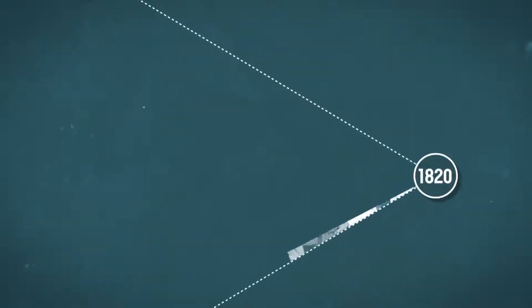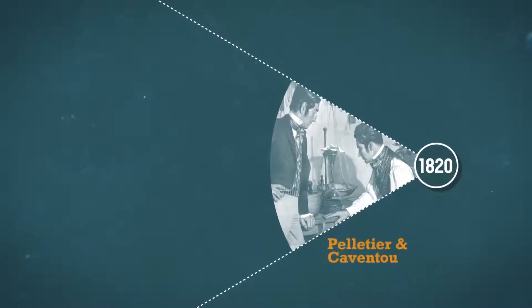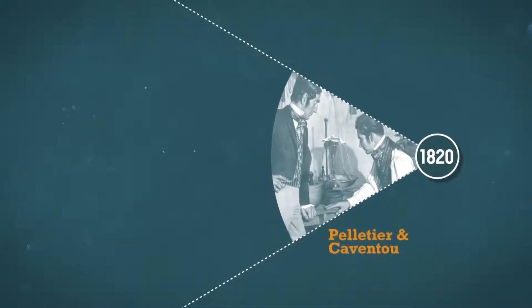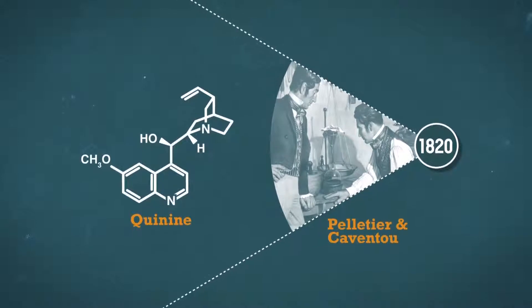In 1820, two French pharmacists, Pelletier and Caventou, isolated the quinine molecule from cinchona bark.